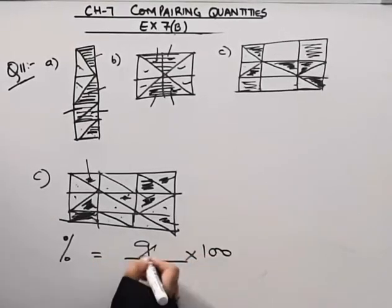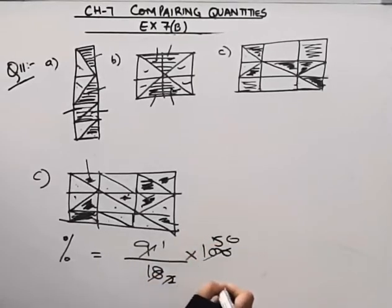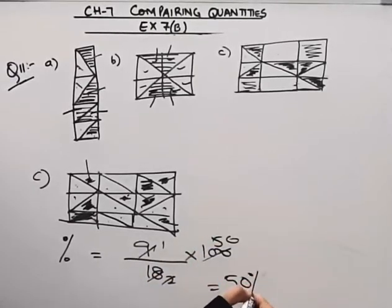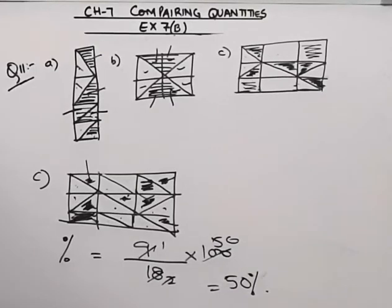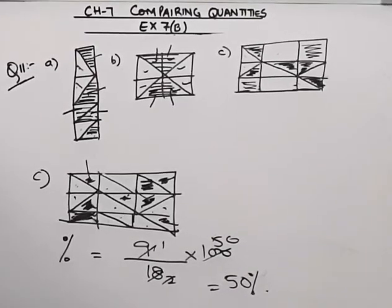Into 100. Nine times 2 is 18, giving us 50. So the answer will be 50%. Here we complete our exercise. Now we move on to the next exercise.